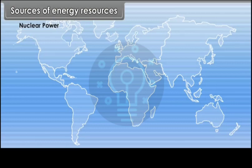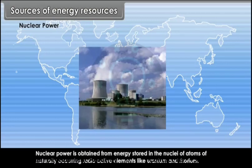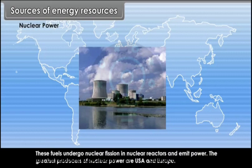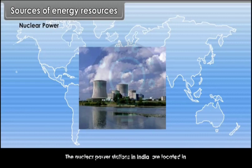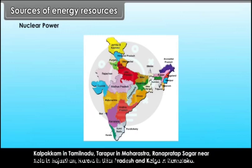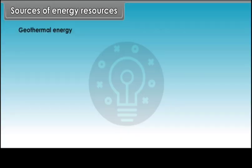Nuclear power is obtained from energy stored in the nuclei of atoms of naturally occurring radioactive elements like uranium and thorium. These fuels undergo nuclear fission in nuclear reactors and emit power. The greatest producers of nuclear power are USA and Europe. Nuclear power stations in India are located in Kalpakkam in Tamil Nadu, Tarapur in Maharashtra, Rana Pratap Sagar near Kota in Rajasthan, Narora in Uttar Pradesh and Kaiga in Karnataka.